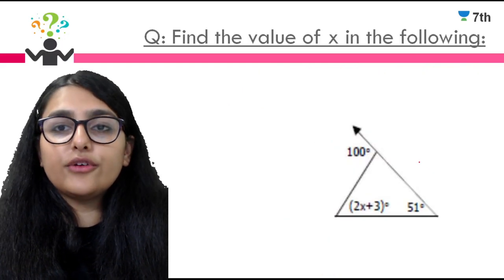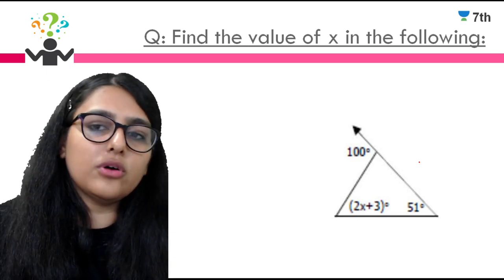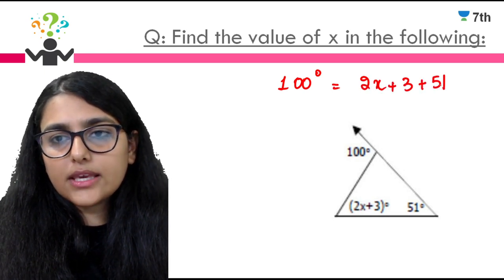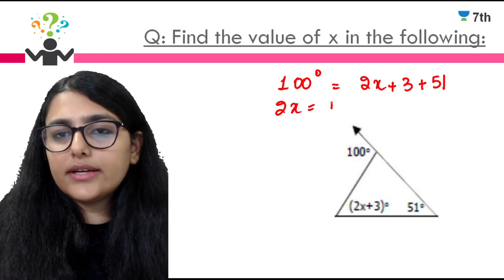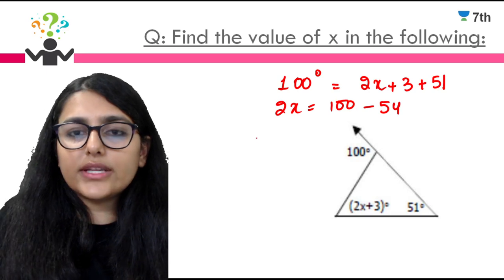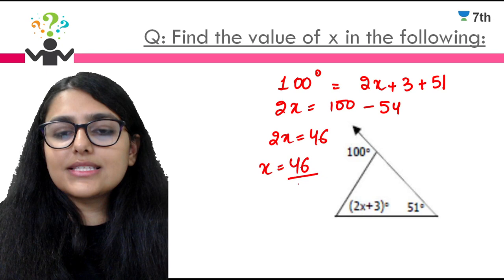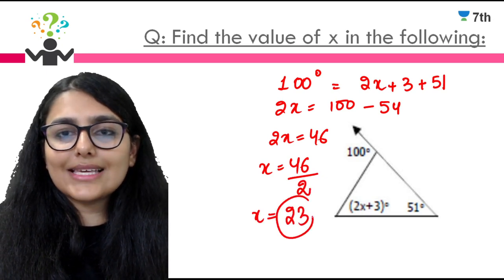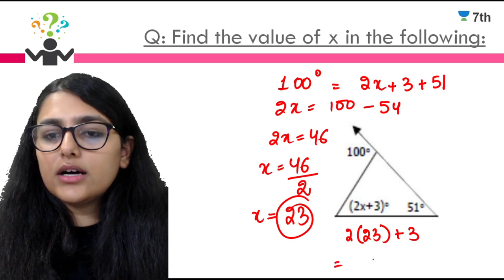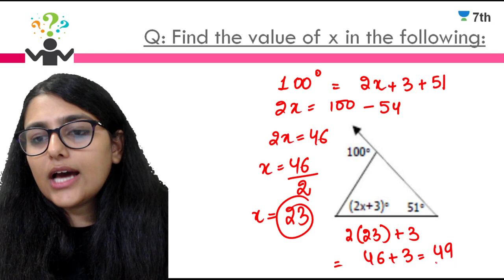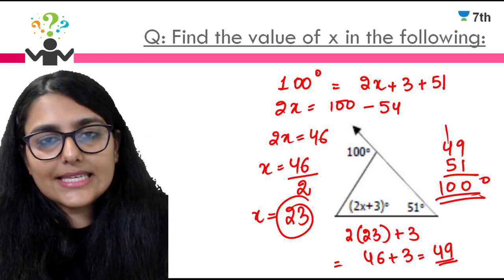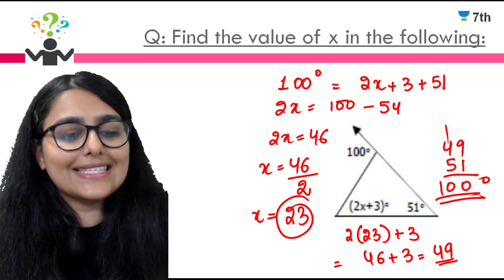Find the value of x: 100 is the exterior angle, equal to (2x + 3) + 51. So 2x = 100 − 54 = 46, giving x = 23. Verification: 2(23) + 3 = 49, and 49 + 51 = 100 — which matches the exterior angle. This is how you solve all questions based on the exterior angle property.